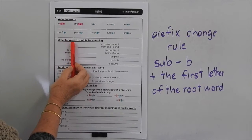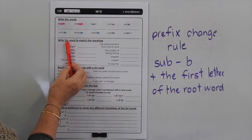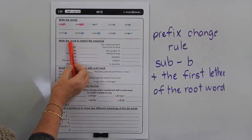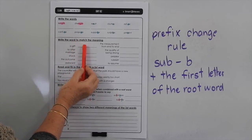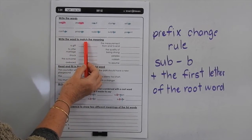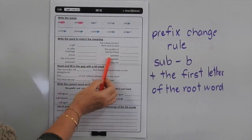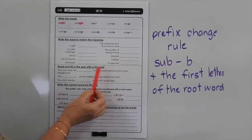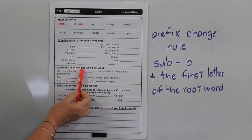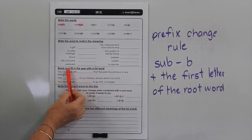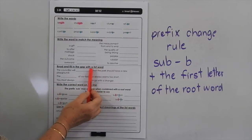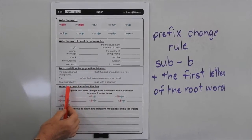We talked about the word meanings yesterday, so I don't need to go through them again today. You just have to work through and find the meaning of each of those words and write the words into the spaces. Then we're asking you to apply that knowledge to read and fill in the gap with the list word down here.